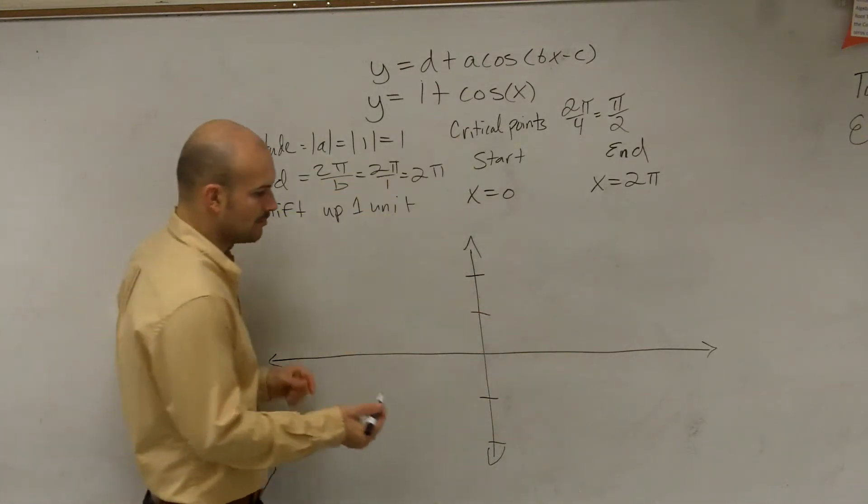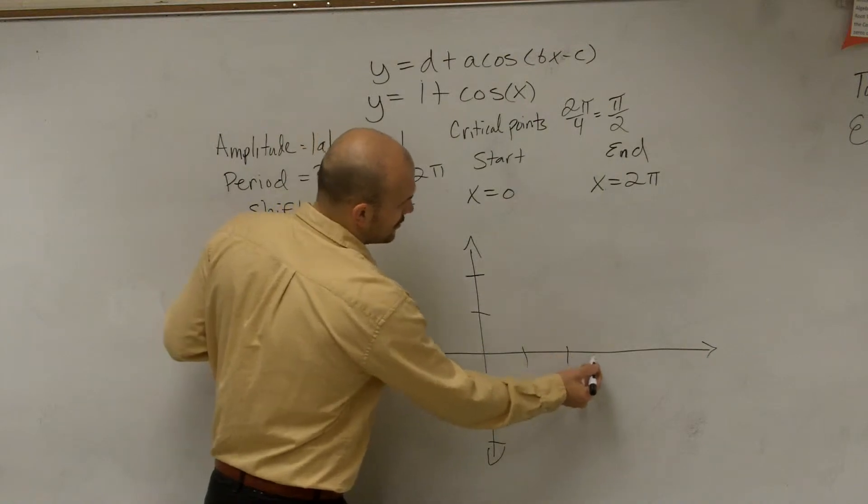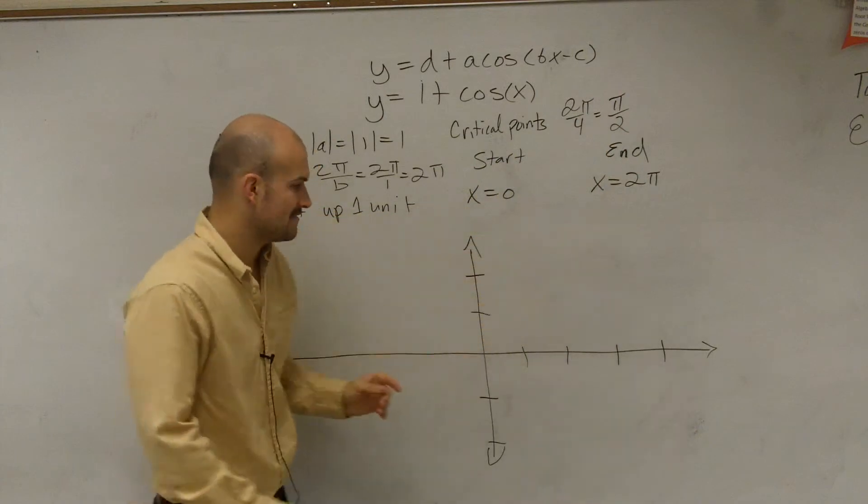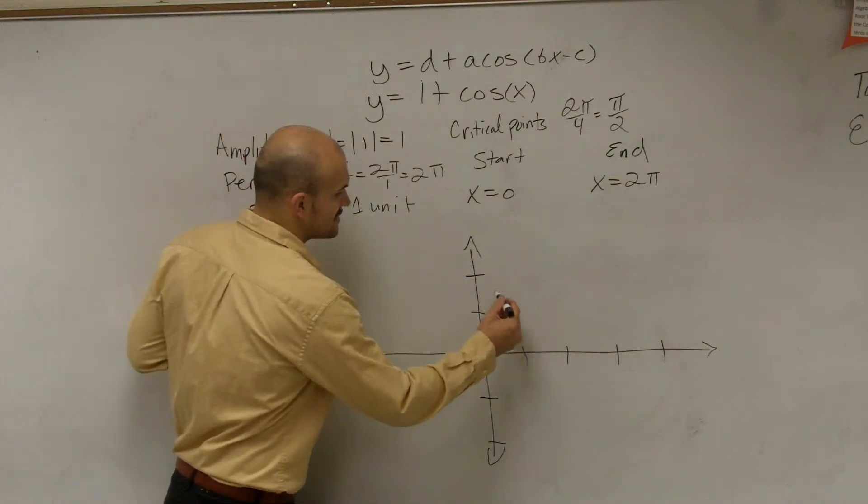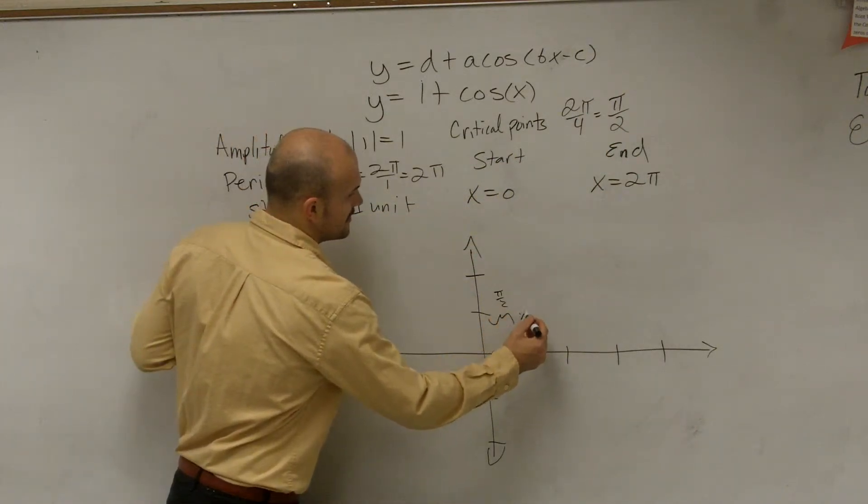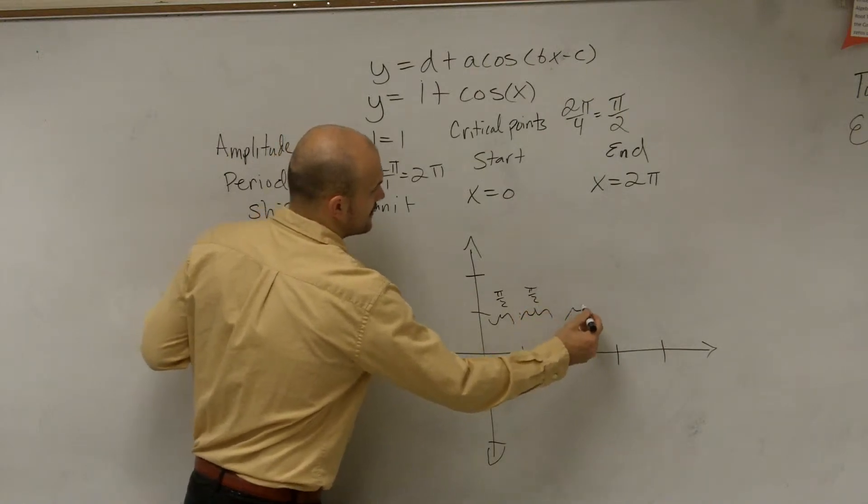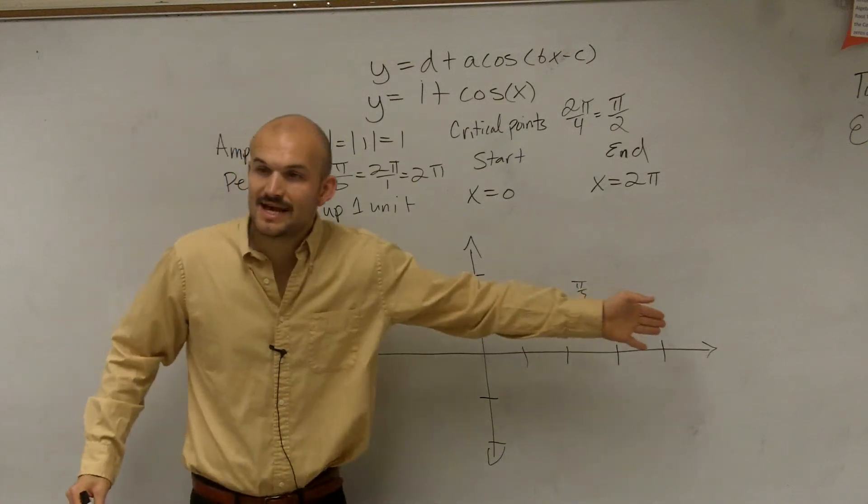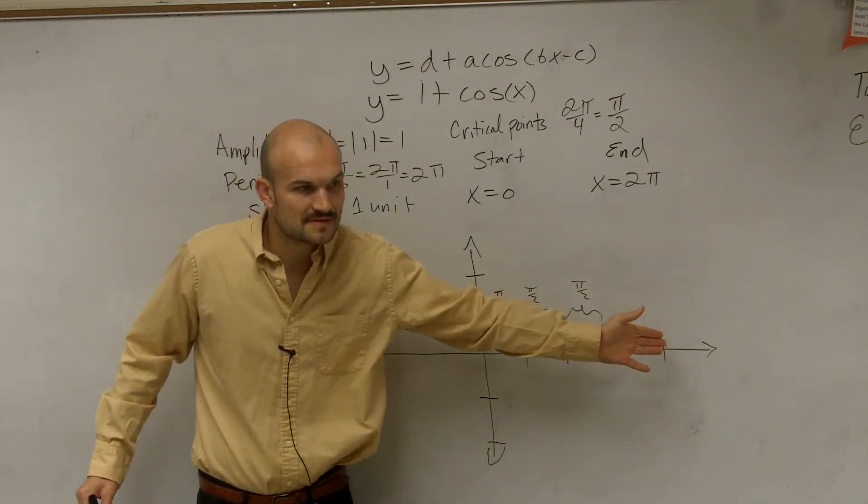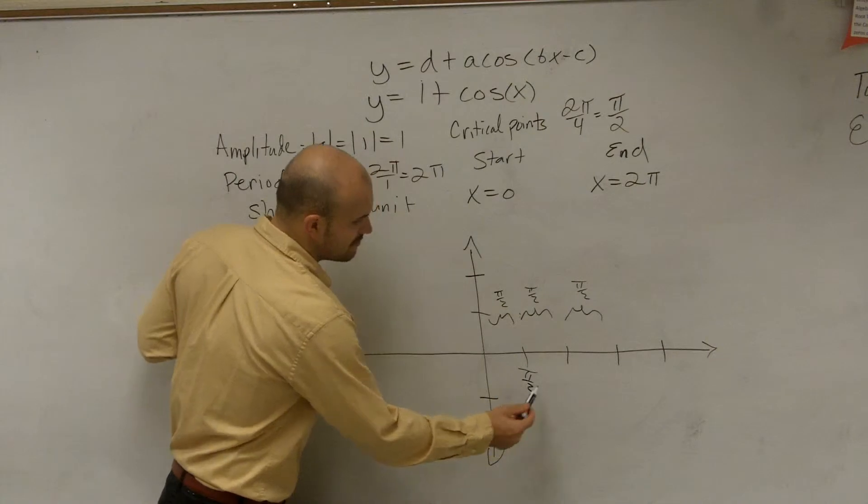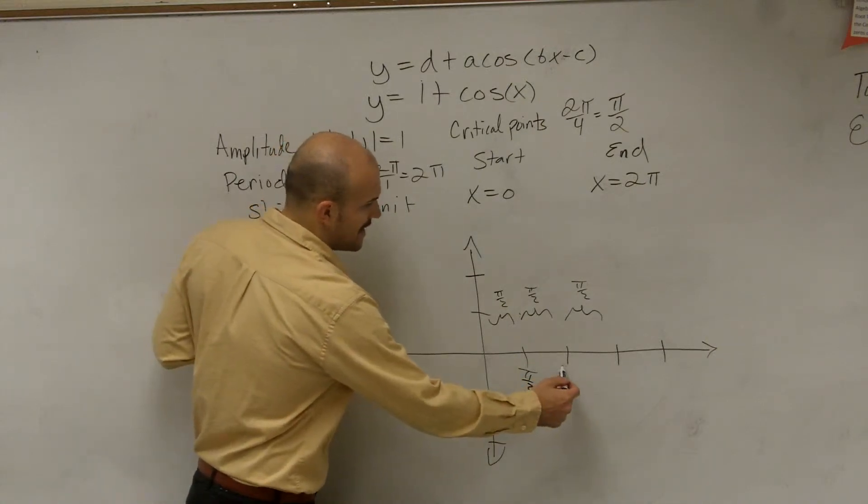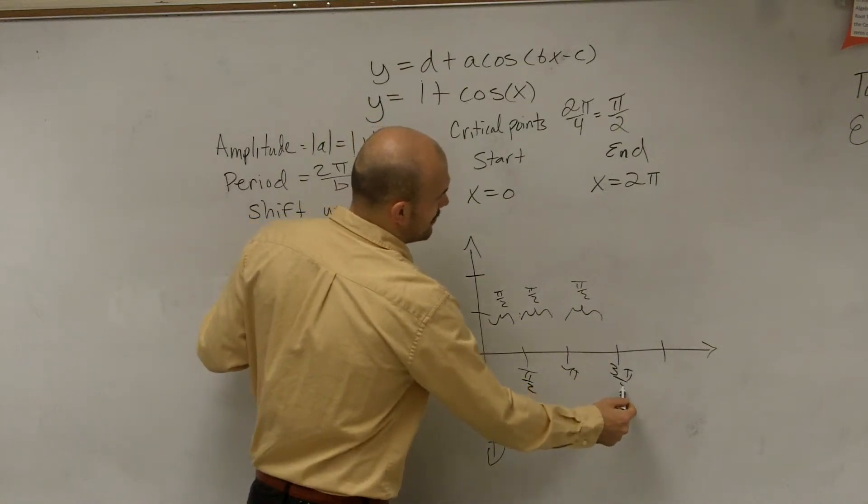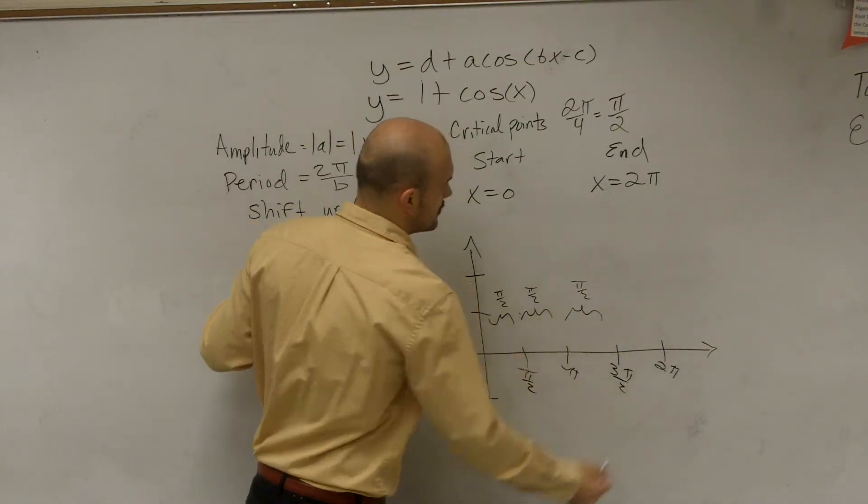So remember, there's four critical points. So we have 1, 2, 3, 4. The distance between the critical points is pi halves. That means this distance is pi halves, this distance is pi halves, this distance is pi halves. Each distance between each x mark is pi halves. So therefore, that means the first one is pi halves, pi halves plus pi halves is pi. Pi halves plus pi is going to be 3 pi over 2, and then 2 pi.